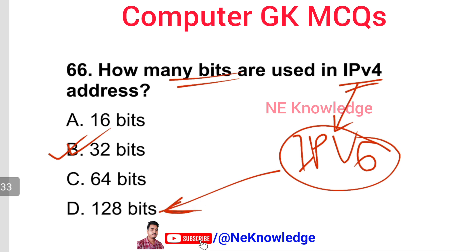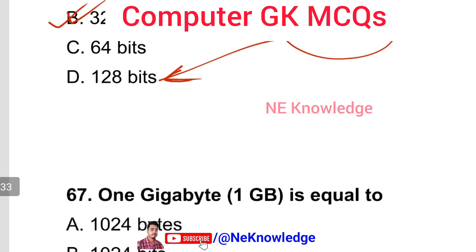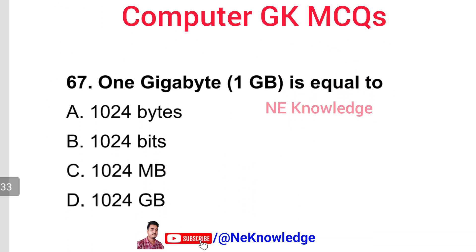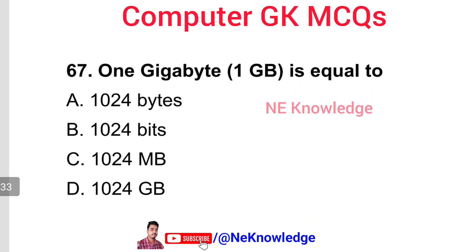Question number 67: How many MB are in 1 GB? 1 GB equals 1024 MB. Option number C is the correct answer. For reference: 1 byte = 8 bits; 1 kilobyte = 1024 bytes; 1 megabyte = 1024 KB; 1 gigabyte = 1024 MB.